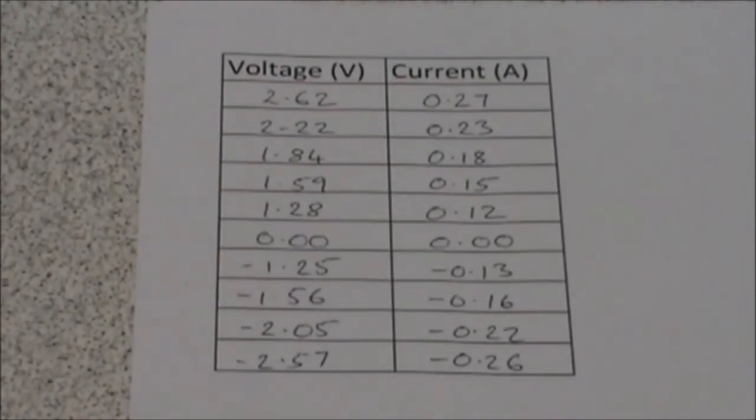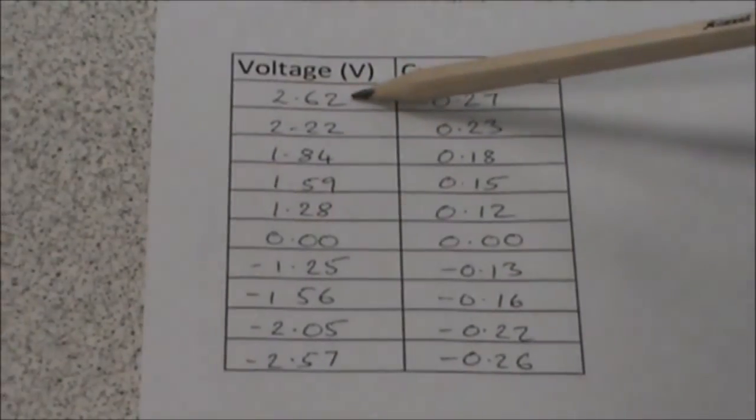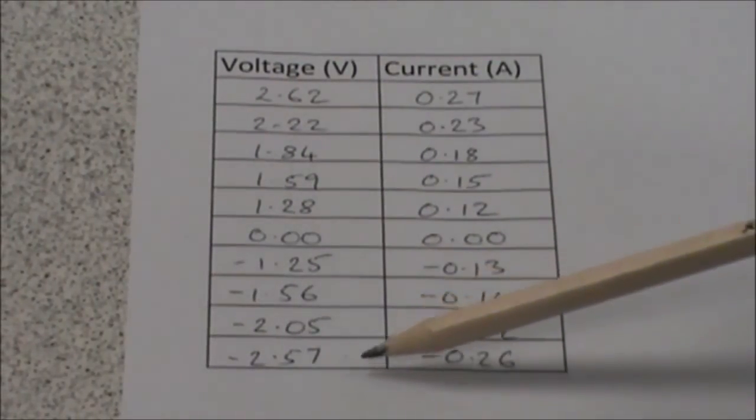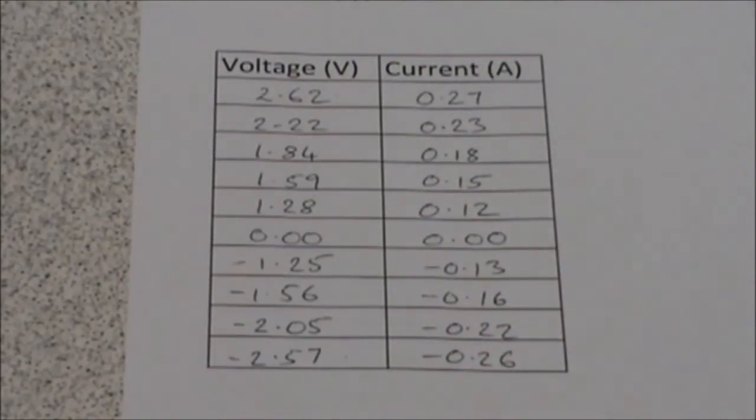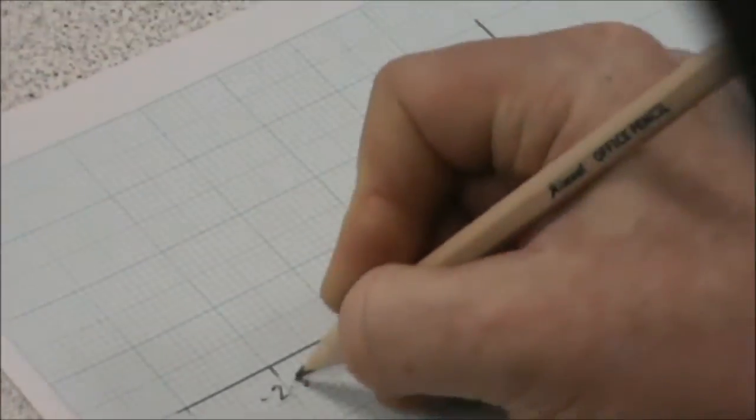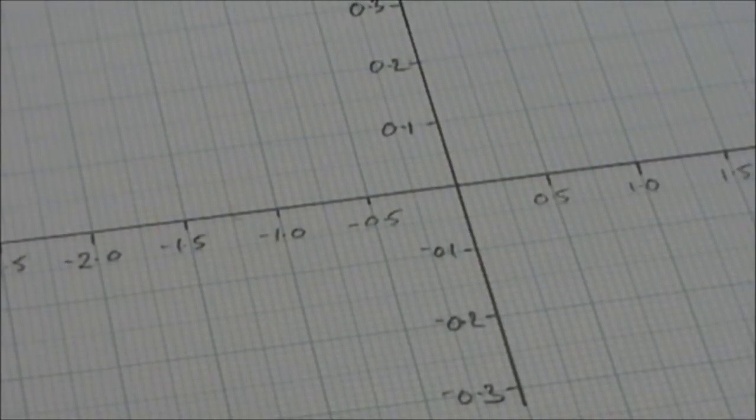If we look at our data, we've got a maximum positive voltage of 2.6 and a negative voltage of minus 2.57, so we're going to want to plot our scale going up to 3 volts and down to minus 3 volts. Our current is going to go from 0.3 down to minus 0.3. Don't forget we need to label our axes, so we've got voltage horizontally and we've got current vertically.